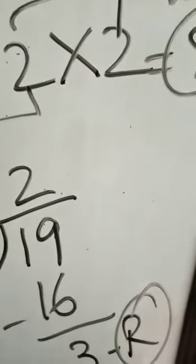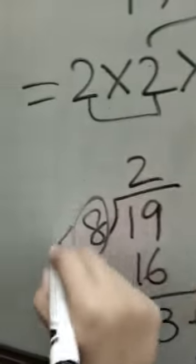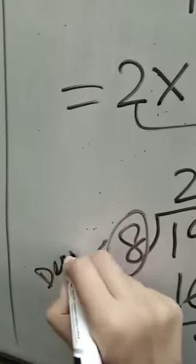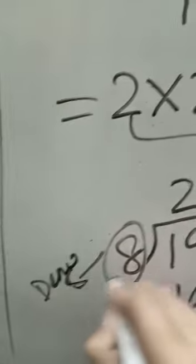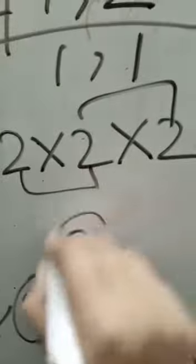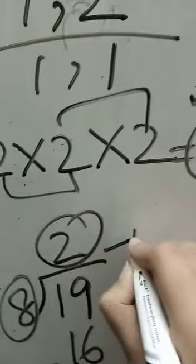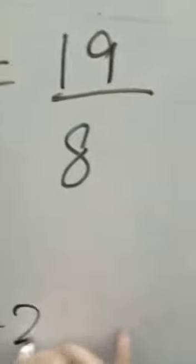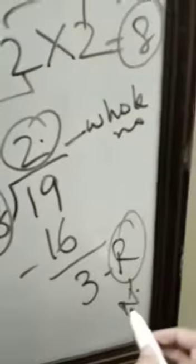We will write the numerator. The denominator is the denominator. The answer is the number — the denominator is according to the answer. To 2, the answer. The remainder is 3.